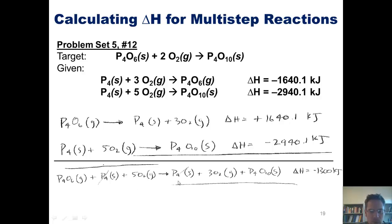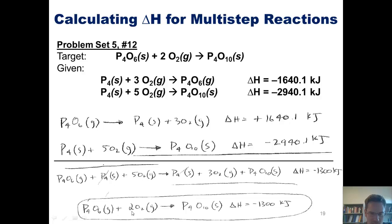You'll also note that algebraically I've got 5O2 on the left side of the equation and 3O2 on the right side of the equation. I can subtract 3O2 from both sides of the equation giving me an overall equation of P4O6 plus 2O2 going to P4O10. That is indeed the exact target equation I've been trying to get to.